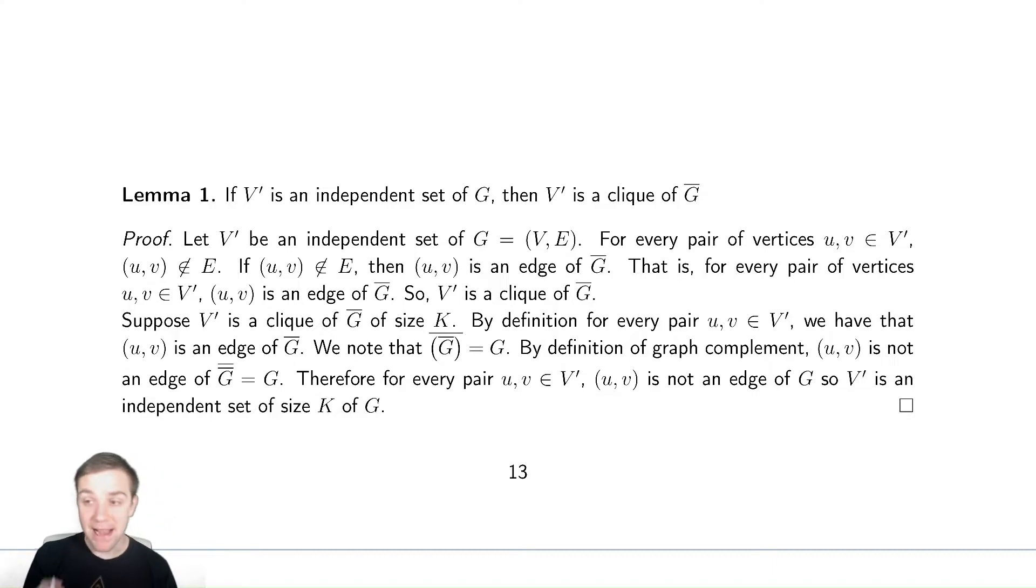But now, by definition of complement, if something is not an edge of the original graph, it must be an edge of the complement. That is the definition of complement. Therefore, every pair of vertices in V' is an edge of the complement. So if every single pair of vertices in V' results in an edge in G bar, then V' must be a clique of G bar.